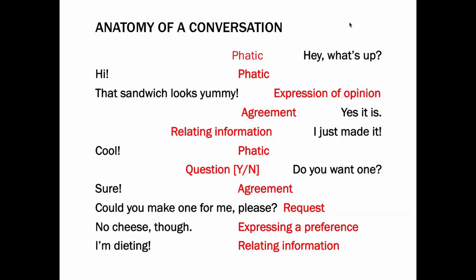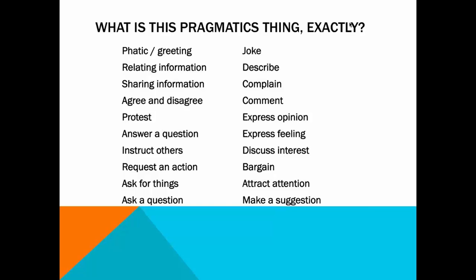In the context of AAC, pragmatics are labels that we give to sentences in conversations which indicate their social function. All of the terms we saw — phatic, asking a question, indicating preference, making a suggestion — are examples of pragmatics. It's important to separate pragmatics from grammar or syntax. When you say 'could you make me a sandwich?' it's a request, not a question, because it has exactly the same pragmatic function as 'please make me a sandwich,' even though it ends with a question mark.